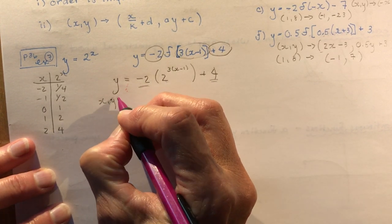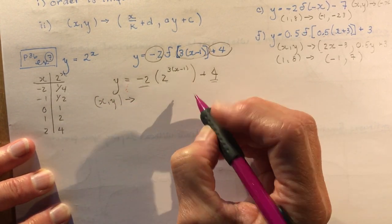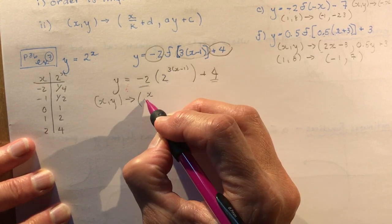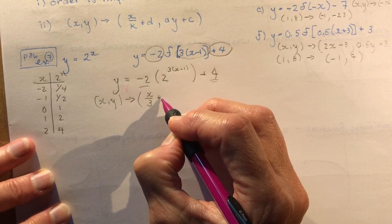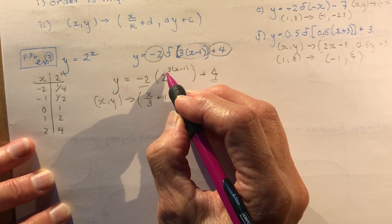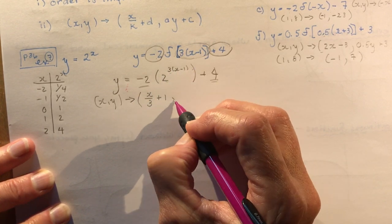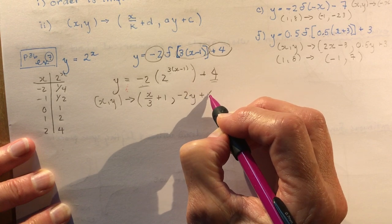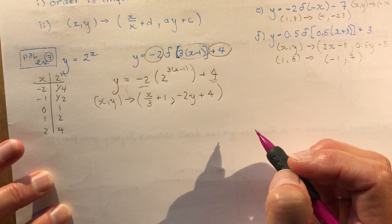Okay, so what's the mapping rule? x, y go to. What do I do to my x's? Well, I divide them by 3 and I add 1. Opposite, right? Divide, add. What do I do to the y's? Minus 2y plus 4. Okay, so there's my mapping rule. And if I want to graph this function now, I'm going to use these coordinates.